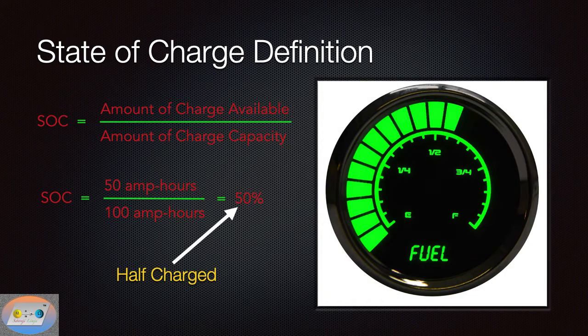When we define state of charge, we're looking at the capacity of the battery. For example, let's say we have a 100-amp-hour battery, and we only have 50-amp-hours available because we only have it half-charged. We say that the state of charge is 50%, because 50 divided by 100 is 50%. And that is pretty much the definition of state of charge: the amount of charge available in the cell right now divided by the amount of capacity of the cell or the battery. It's very simple.